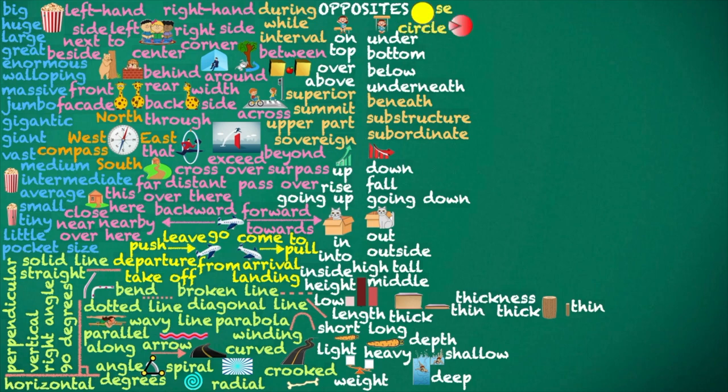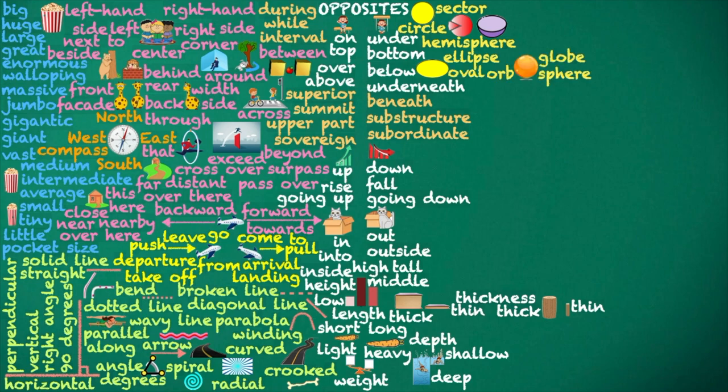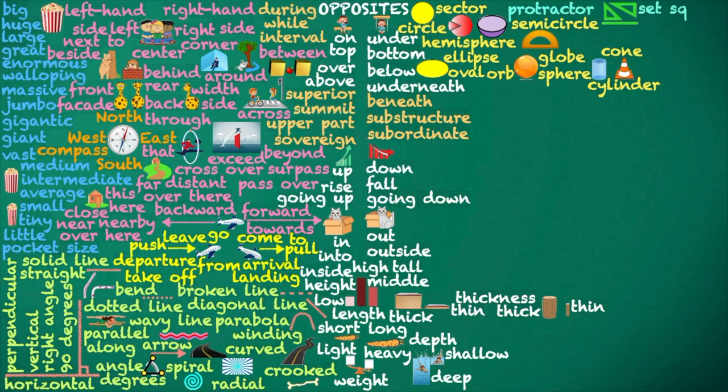Circle. Sector. Hemisphere. Ellipse. Oval. Orb. Globe. Sphere. Cylinder. Cone. Semicircle. Protractor. Set square.